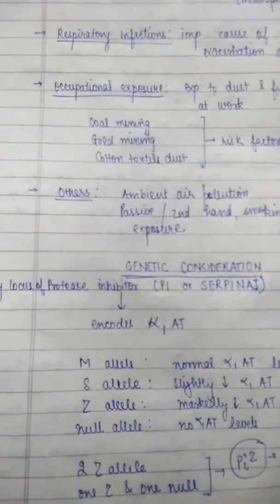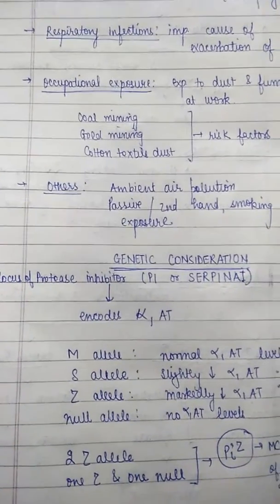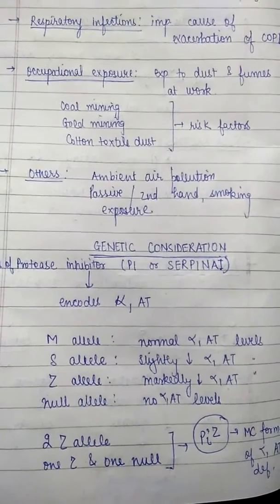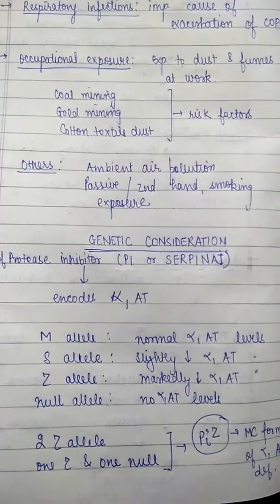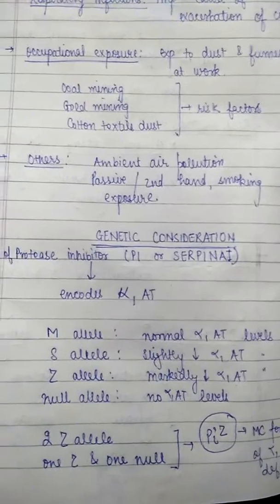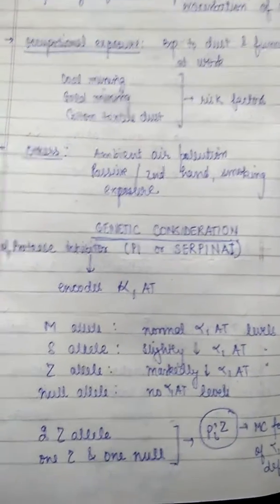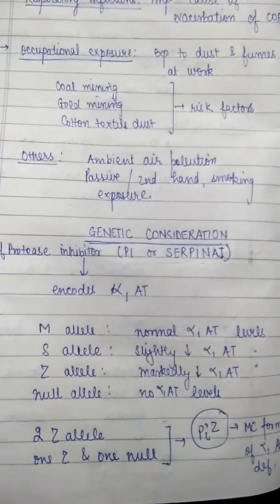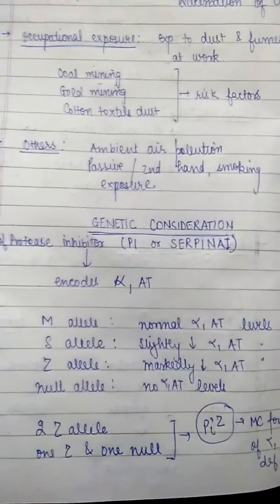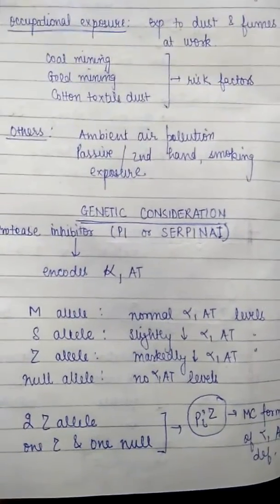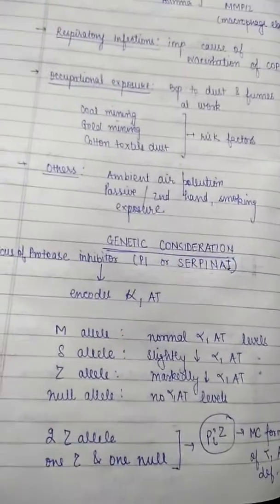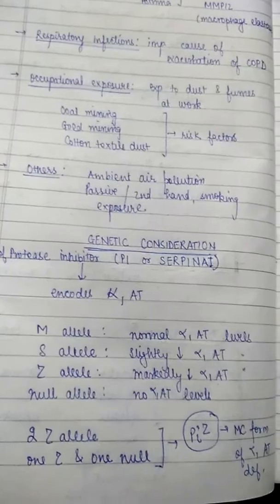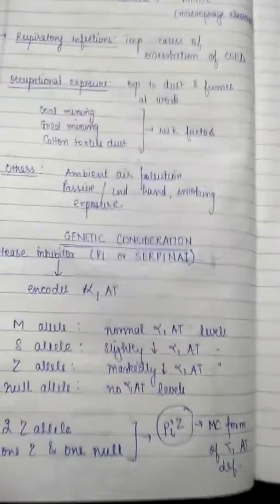Regarding genetic considerations, there are many loci of protease inhibitors (PI) which encode for alpha-1 antitrypsin. The M allele depicts normal alpha-1 levels, the S allele shows slightly decreased levels, the Z allele shows markedly decreased levels, and the null allele refers to no alpha-1 antitrypsin levels at all.